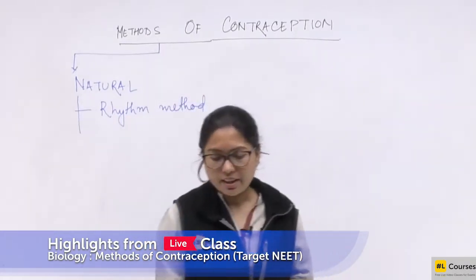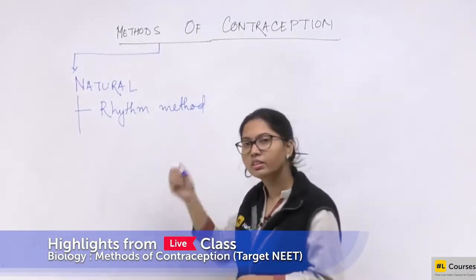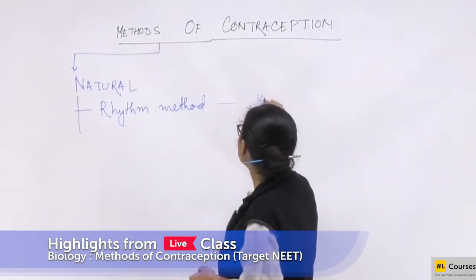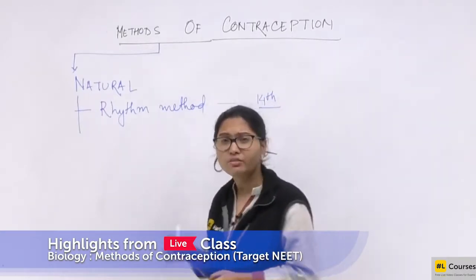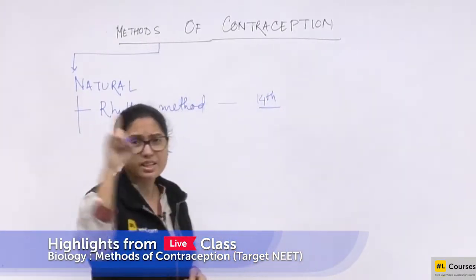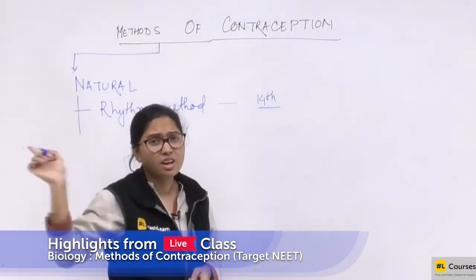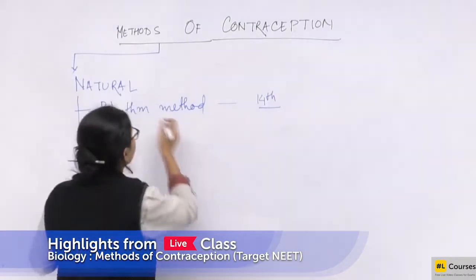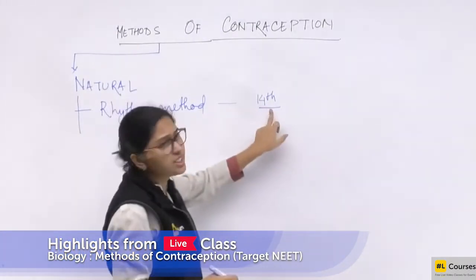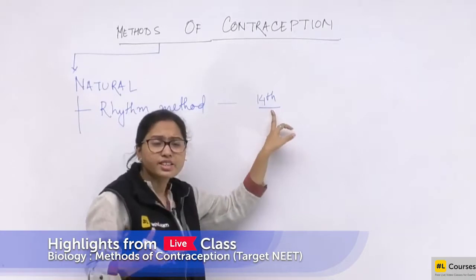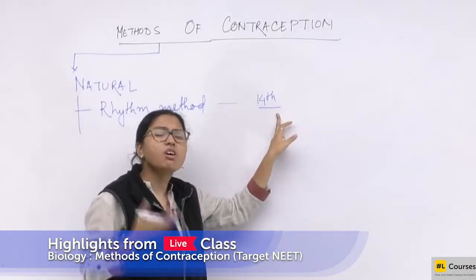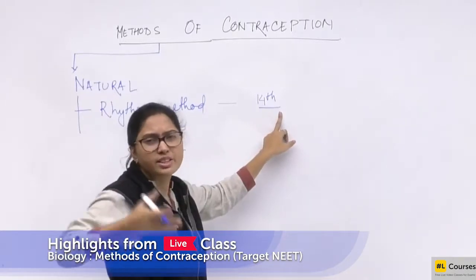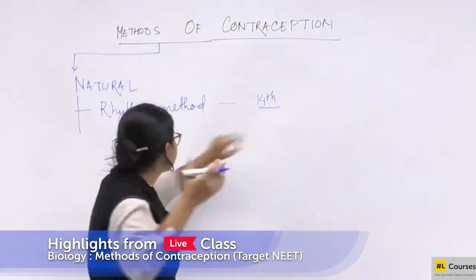The rhythm method is based on the fact that ovulation takes place on day 14 of the menstrual cycle. That's why this chapter has a very good connection with human reproduction. For fertilization or implantation to take place, ovulation must occur, so if you avoid fertilization, pregnancy can be avoided.